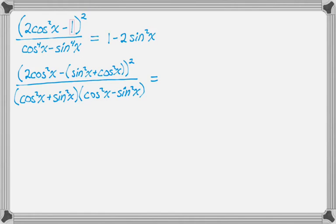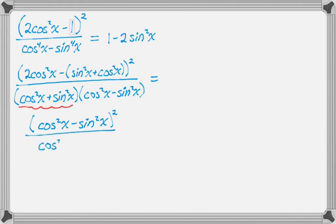The numerator now simplifies to the quantity cosine squared minus sine squared, all squared — I just combined like terms and kept the whole quantity squared. In the denominator, cosine squared plus sine squared is 1, so I just have cosine squared minus sine squared. That gives me cosine squared minus sine squared, squared, all over cosine squared minus sine squared, which simplifies to just cosine squared minus sine squared.